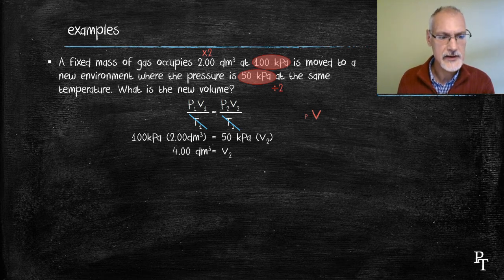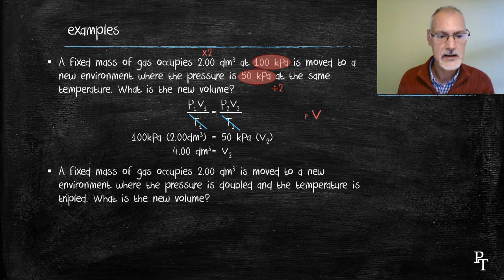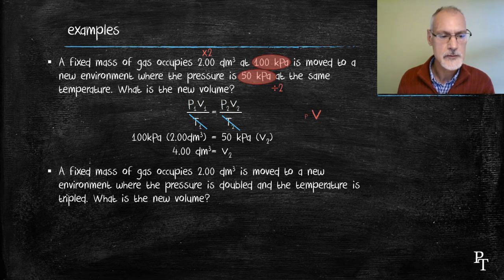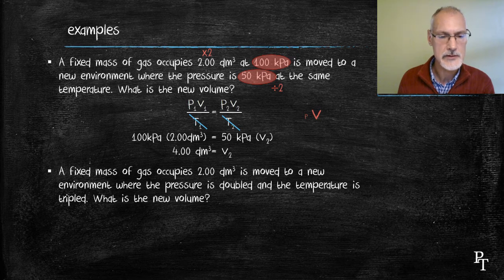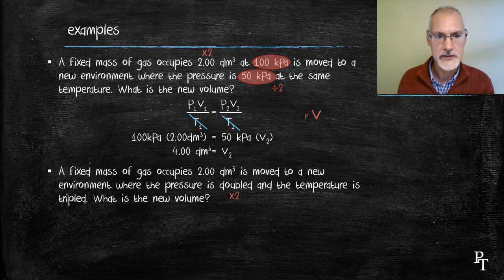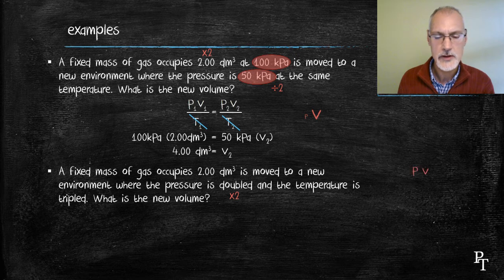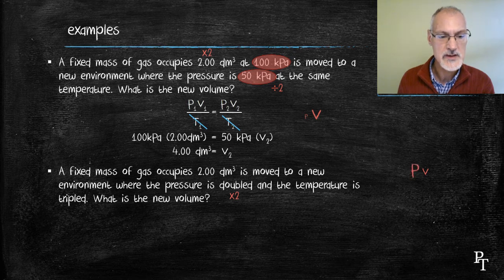Let's look at a second example where a fixed mass of gas, again, 2 decimeters cubed is moved to a new environment where the pressure is doubled and the temperature is tripled. Let's start off with the doubling of the pressure. Let's look at how that affects my volume. Again, this is the relationship of Boyle's law, pressure and volume. Here my pressure went up, my volume must go down. So I'm going to be dividing that 2 decimeters cubed by 2 for the effect of pressure.